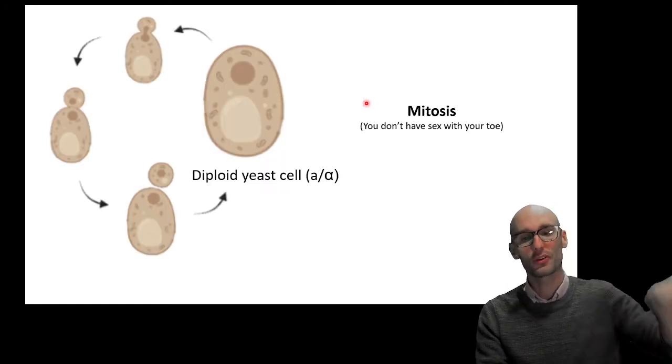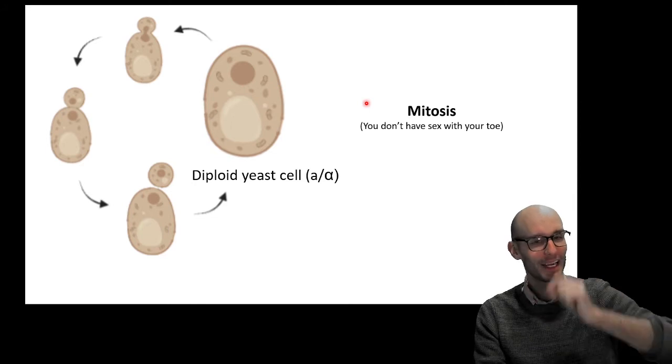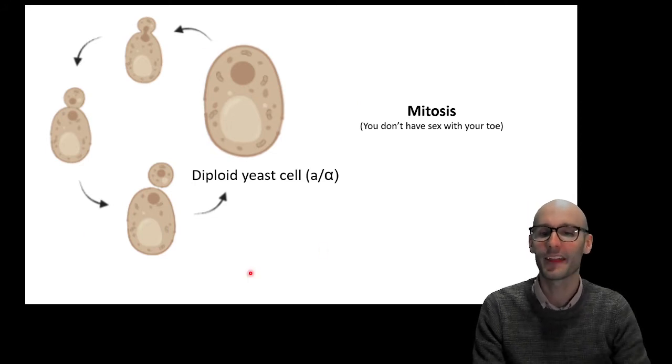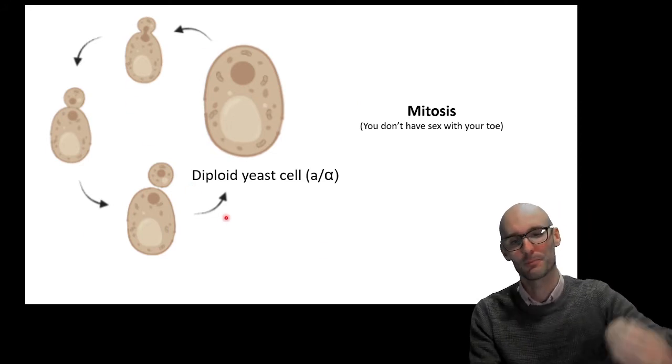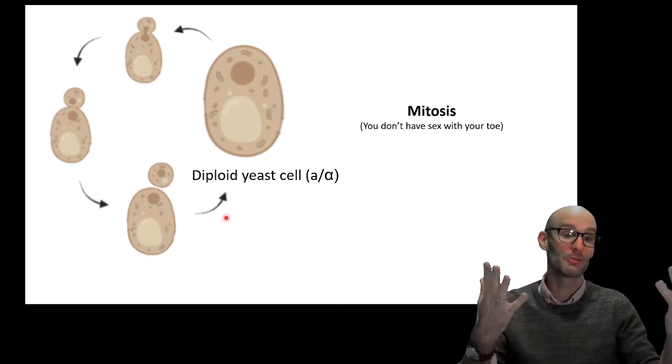Now, in a diploid cell, they can also undergo mitosis. So it's quite a complicated life form, isn't it? So here, they can undergo just a diploid mitosis, where they can produce more of them.